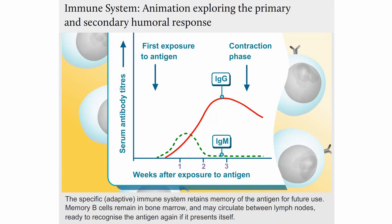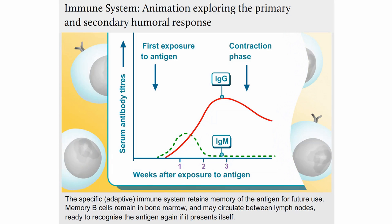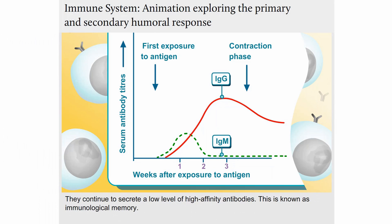The specific adaptive immune system retains memory of the antigen for future use. Memory B-cells remain in bone marrow and may circulate between lymph nodes, ready to recognise the antigen again if it presents itself. They continue to secrete a low level of high affinity antibodies. This is known as immunological memory.